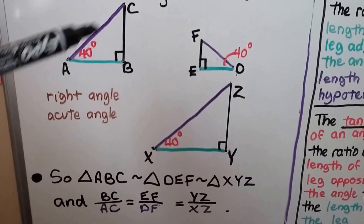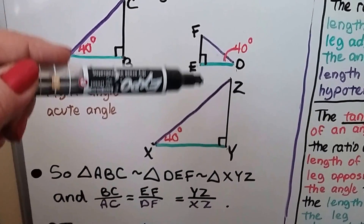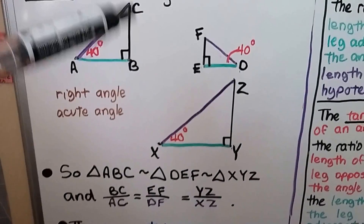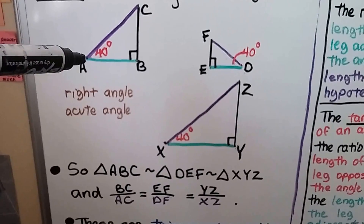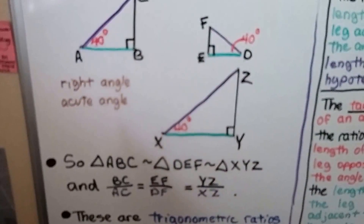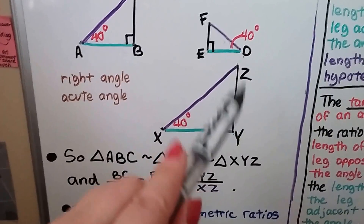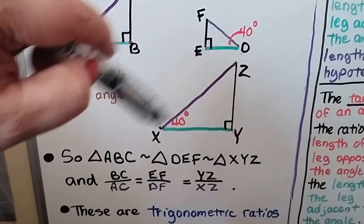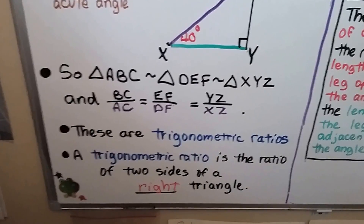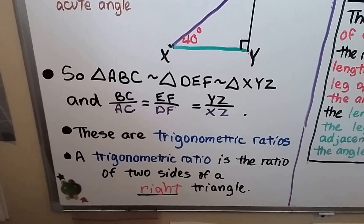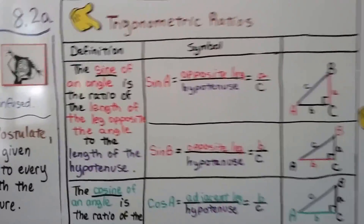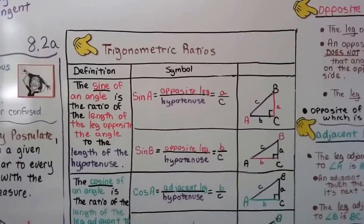Triangle ABC is similar to triangle DEF, which is similar to triangle XYZ. Leg BC over hypotenuse AC equals leg EF over hypotenuse DF, which equals leg YZ over hypotenuse XZ. These are trigonometric ratios. A trigonometric ratio is the ratio of two sides of a right triangle, so we're only dealing with right triangles.